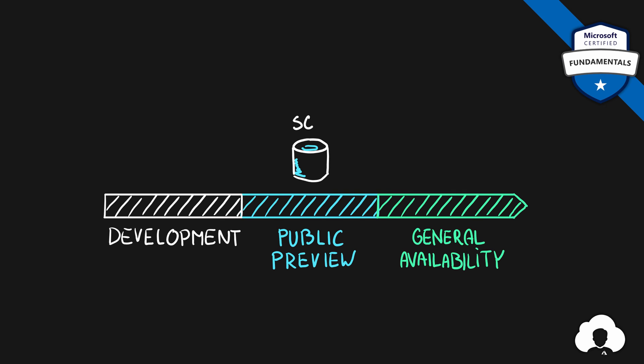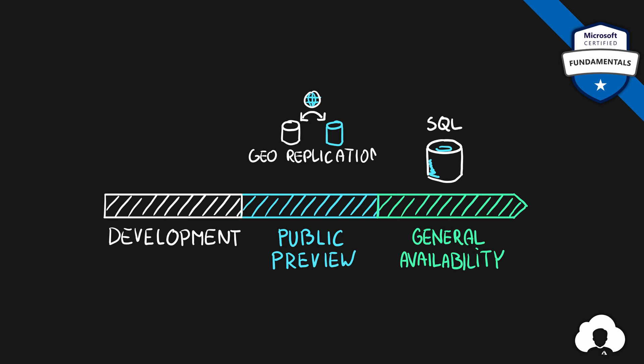When the service is validated, it's then released to the public for the second time, this time as a production-ready service. This stage is known as general availability, or GA for short. You will very often hear people say that the service has been GA'd. When the service is in general availability, Microsoft will keep improving the service and bringing new features in. Those features might land directly in GA, but very often they will be marked as a public preview too.